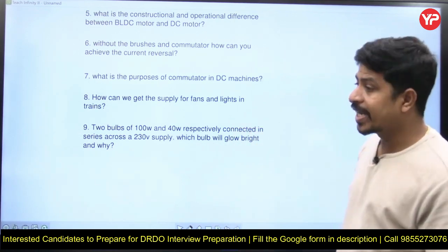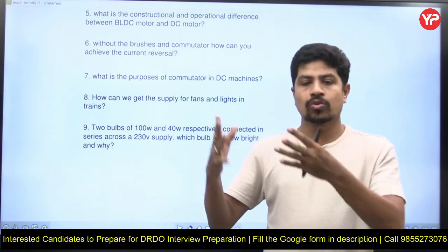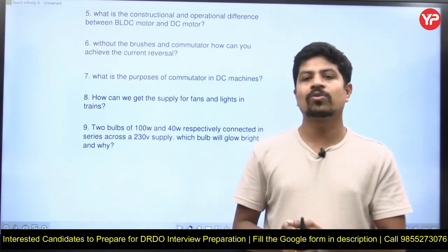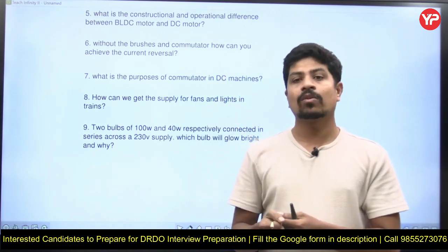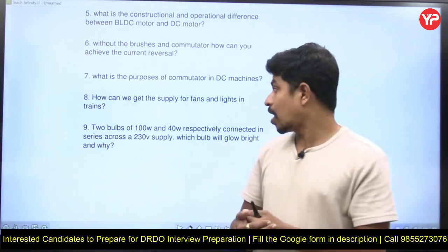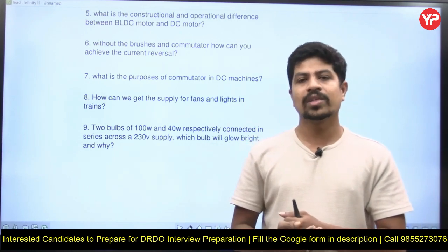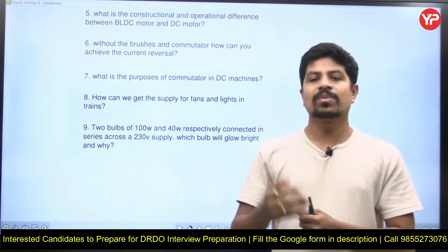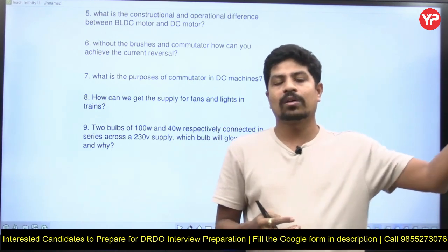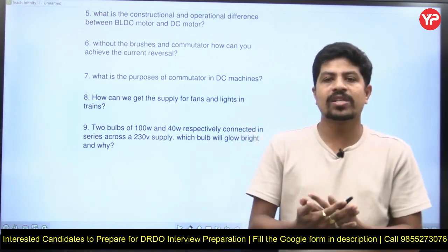How can we get the supply for fans and lights in trains? Fans and lights in trains operate at 120 volts, not 220 volts like household supply. One reason is theft prevention — equipment running on 120 volts is not useful if stolen since home appliances need 220 volts. The power supply to trains involves several converters depending on the type of locomotive — electric or diesel — and the voltage received. AC or DC conversion, motor type, and the full power schematic would need to be discussed to completely answer this question.